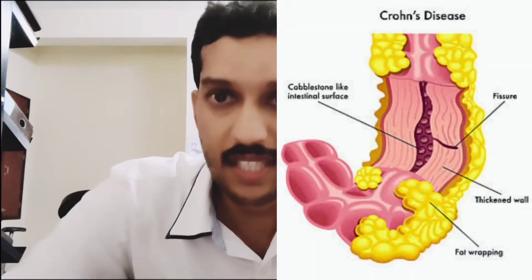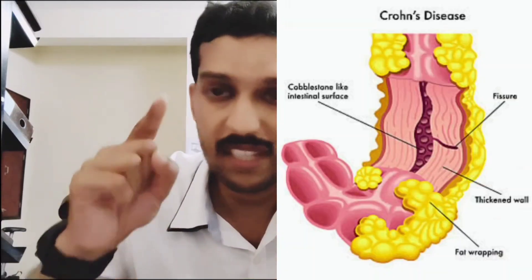The most common site of Crohn's disease is the ileum, followed by the cecum. In ulcerative colitis, the most common site is the rectum, and it spreads retrograde — going from the rectum upward to the colon. So ileum is the most common site in Crohn's disease, and rectum in ulcerative colitis.